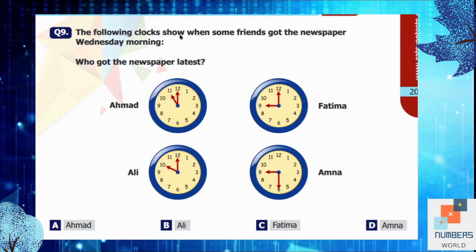Question number 9: The following clocks show when some friends got the newspaper Wednesday morning. Who got the newspaper latest? Latest means at the end. So look at the clocks. It's 11 o'clock. Ahmed got the newspaper at 11 o'clock. Fatima got it at 9 o'clock. Ali got it at 10 and Amna got it at 9:30. So now you can see which person got the newspaper latest. It's Ahmed because he got the newspaper at the end at 11 o'clock. So A is our answer.